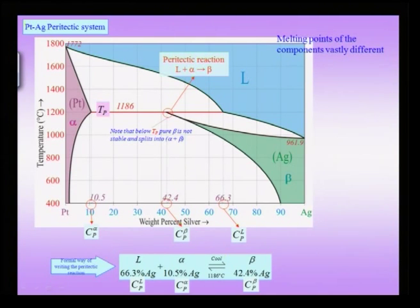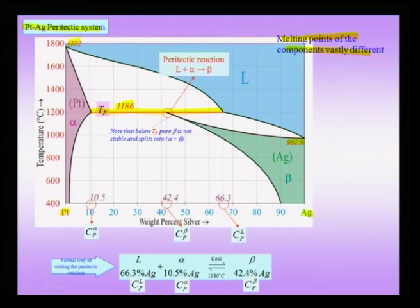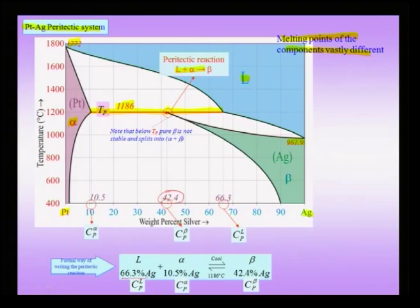In the platinum-silver peritectic system, the melting point of platinum is 1772°C, much above silver at 961°C. The peritectic reaction has a horizontal line at 1186°C. At the two ends of this line, where three-phase equilibria exists, you have the alpha phase and the liquid phase. This alpha reacts with this liquid to produce beta at a composition of 42.4 percent silver. Liquid with 66 percent silver reacts with alpha with 10.5 percent silver to give beta with 42 percent silver at 1186°C.